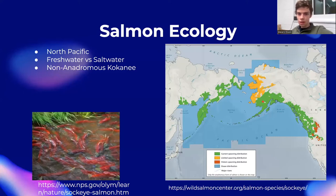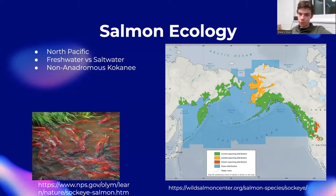While juveniles, sockeye live in freshwater. As they mature, they migrate to the ocean. Later in life, they return to freshwater lakes and streams to spawn, as they only spawn in freshwater.